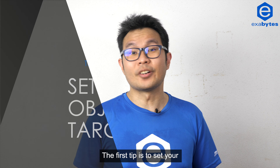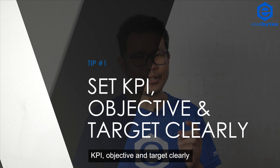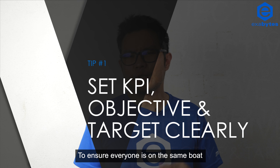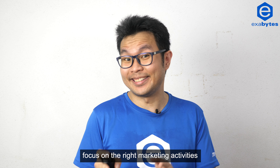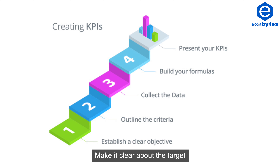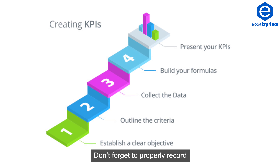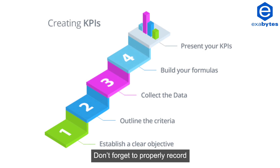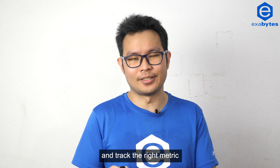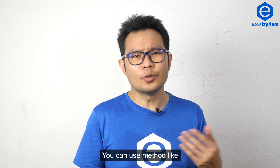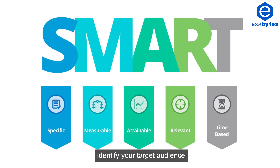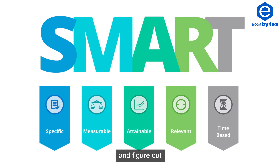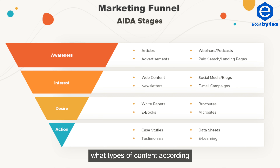The first tip is to set your KPI objective and target clearly. To ensure everyone is on the same boat, focus on the right marketing activities and make it clear about the target. Don't forget to properly record and track the right metrics. You should use smart analysis, identify your target audience, and figure out what types of content according to the marketing funnel.